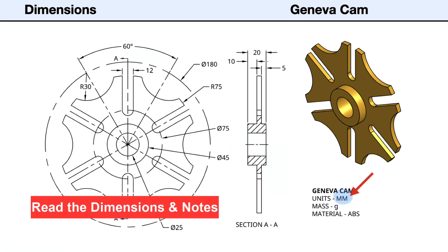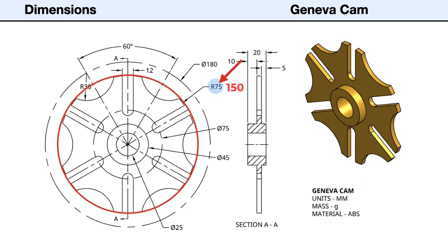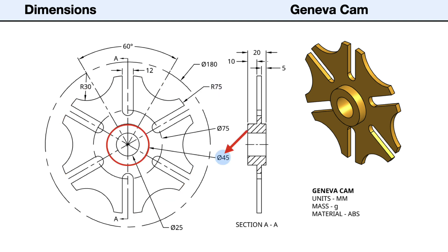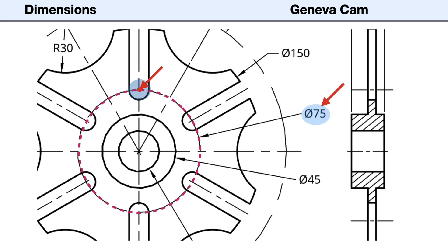Next, we'll look at the dimensions and notes. The measurement units are in millimeters. The outside of the plate has a diameter of 150 millimeters, or a radius of 75. The outside diameter of the center hub is 45 millimeters. The center hole diameter is 25 millimeters. The slot is 12 millimeters wide, and the radius of its semicircular end is 6 millimeters. The center point of the semicircular end is located on a concentric centerline circle that has a diameter of 75 millimeters, placing it 37.5 millimeters from the center.